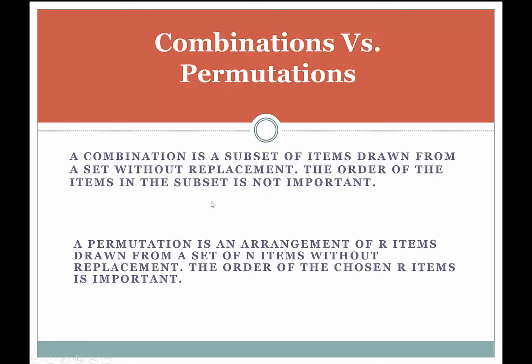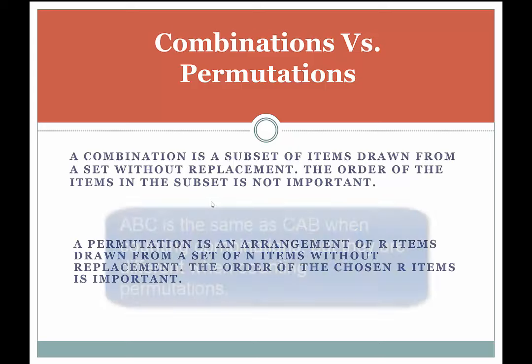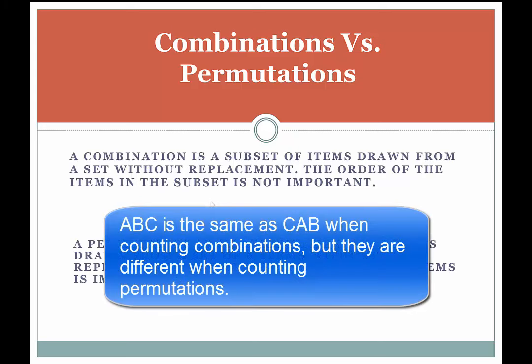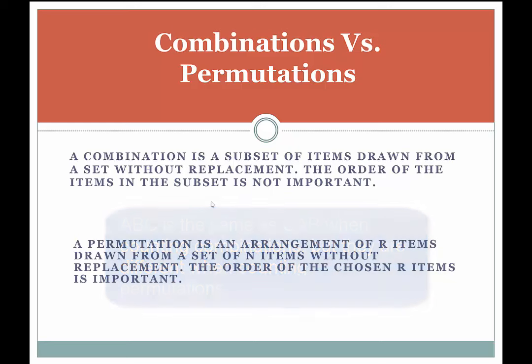With a permutation you have to think of all the different ways it can be scrambled up. For example, if I take three letters from the 26 letters in the English alphabet, the letters ABC count as one combination. It doesn't matter if you scramble them and call it BAC or CBA — that's still just one combination because they have the same three letters. But with a permutation, ABC would be counted differently from BAC or CBA.